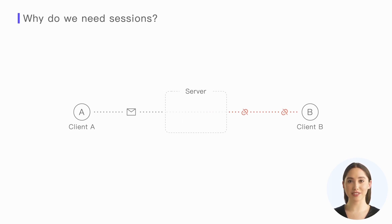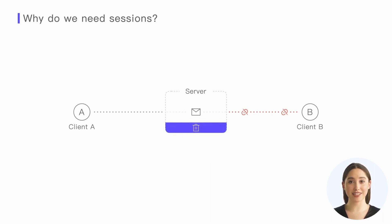This means that we cannot guarantee message arrival, and the mechanisms of QoS1 and QoS2, which are designed to ensure message delivery, become meaningless. Additionally, even though the connection between the server and client B has been disconnected, client A is unaware of this and continues to publish messages to the server. However, the server will discard these messages since they have no subscribers. Although client B will reconnect after a certain period, it needs to resubscribe to the topics of interest to resume communication.